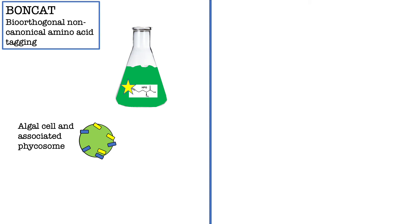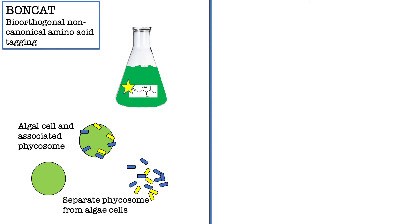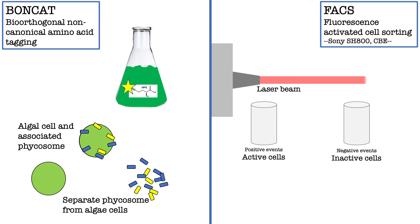We separate the ficosome from the host algal cells and take the cells to the flow cytometer. At the CBE, we have a Sony SH800, which is a very user-friendly flow cytometer. We use fluorescence-activated cell sorting, or FACS, to count and sort cells that are differentially labeled with fluorescent probes. We load our ficosome cells into the machine and select the laser that separates our active cells from the unlabeled based on the presence of the yellow fluorescent label.